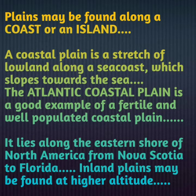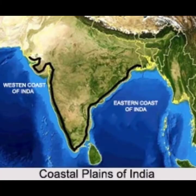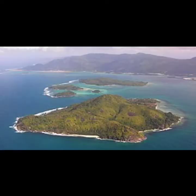Plains may also be found along a coast or an island. The coastal plain is a stretch of low land across a sea coast which slopes towards the sea. Coast refers to the banks of a river or ocean, and an island is a piece of land surrounded by water. So apart from northern plains, plains can also be found near coasts or islands.